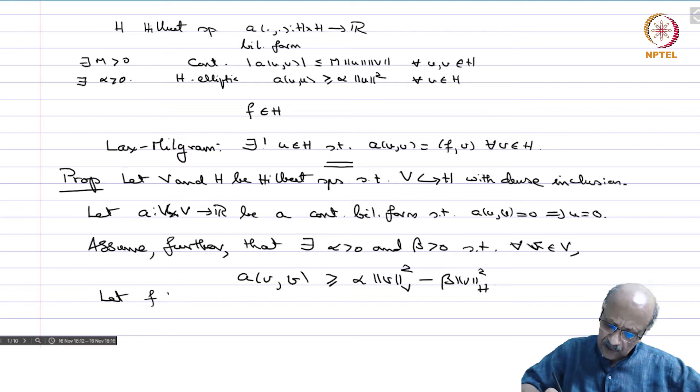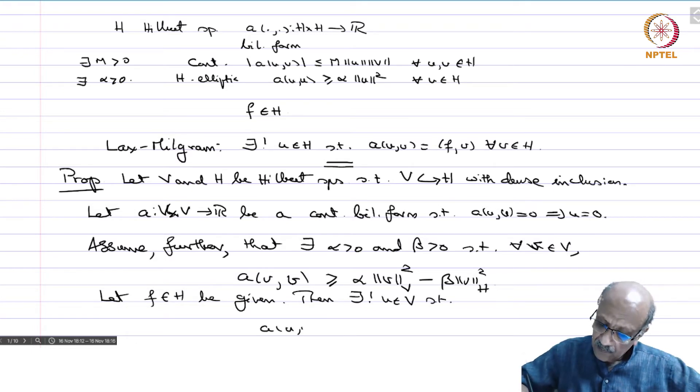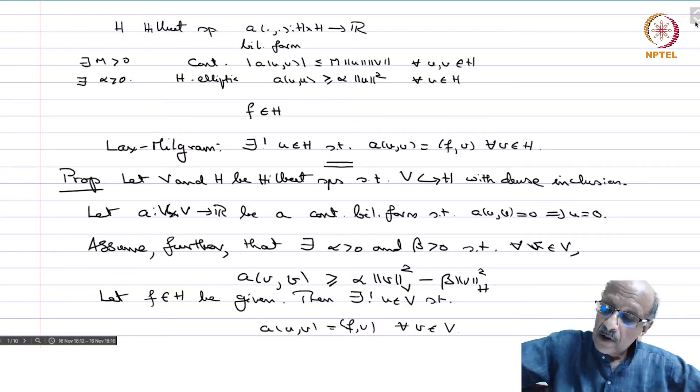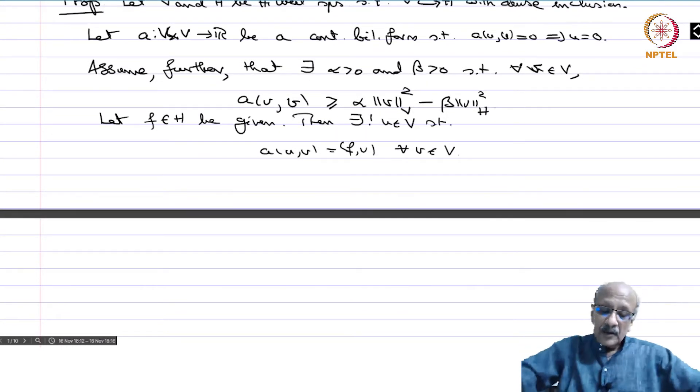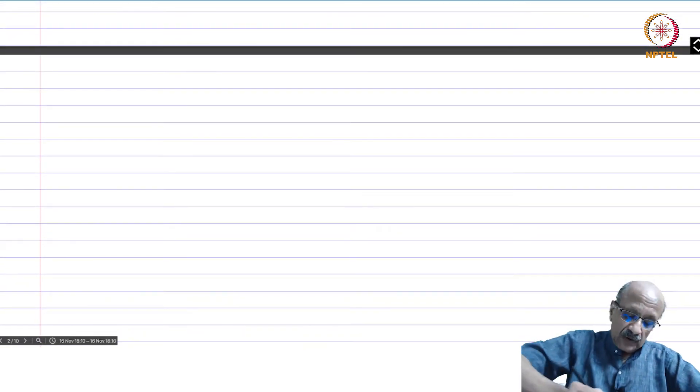Let F belong to H be given. Then there exists a unique u in V such that A(u,v) = F(v) for every v. This is the same conclusion as Lax-Milgram, but now you don't have ellipticity; instead you have a dense inclusion in another Hilbert space and this inequality, and A(u,u) = 0 implies u = 0.